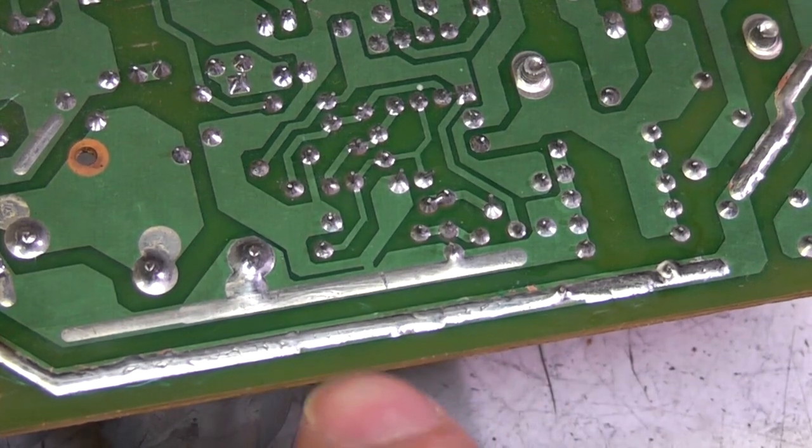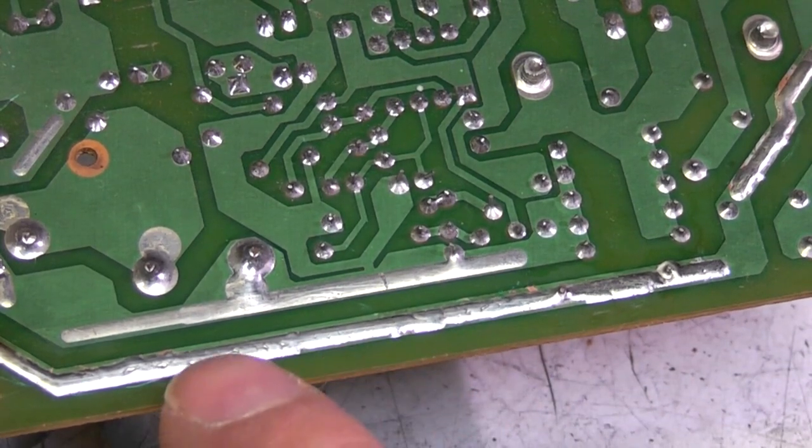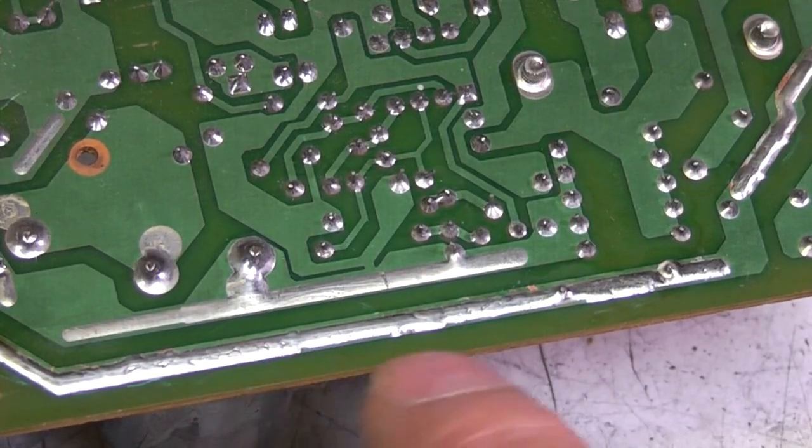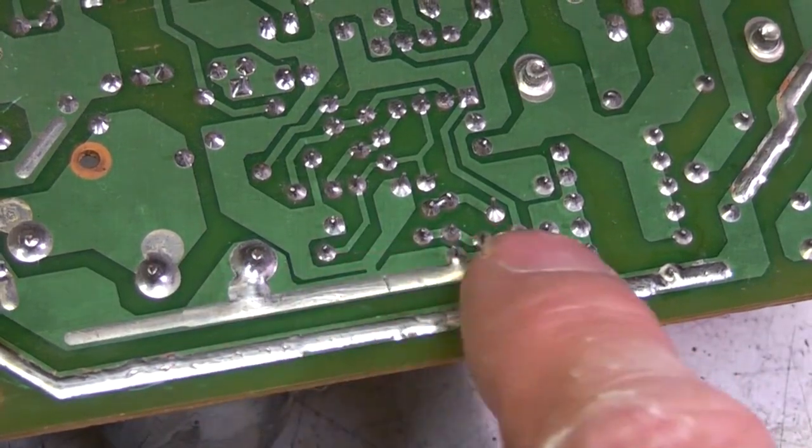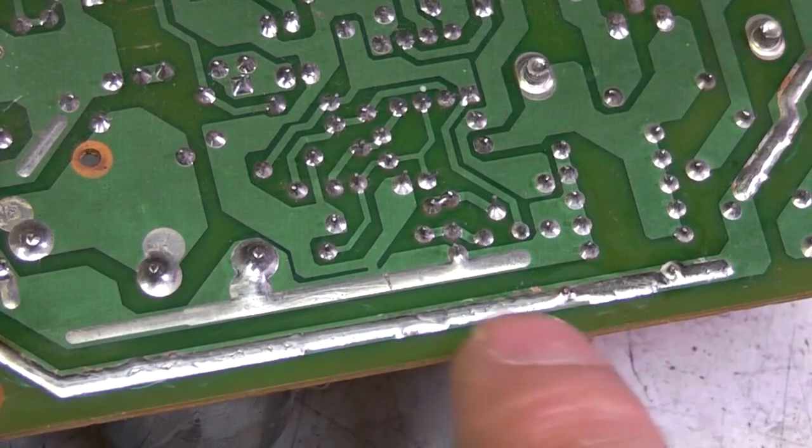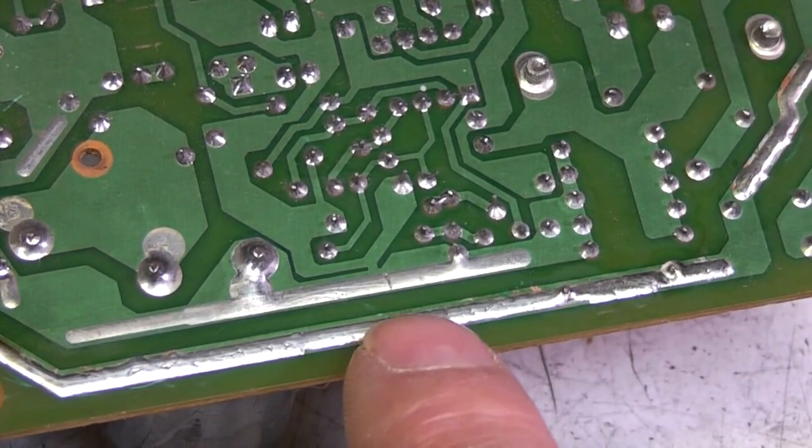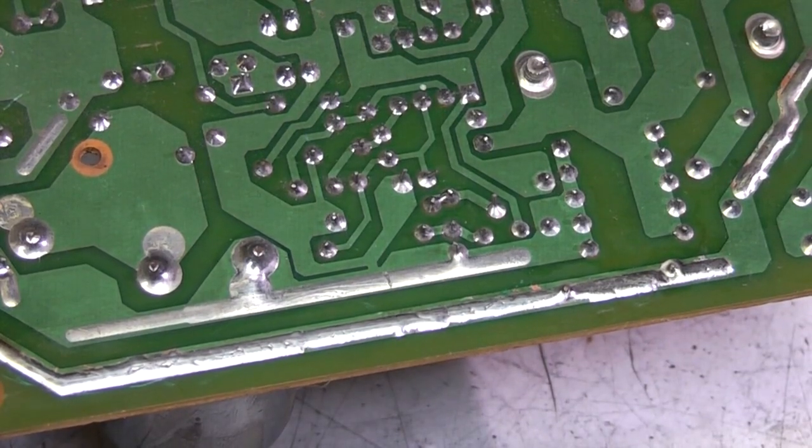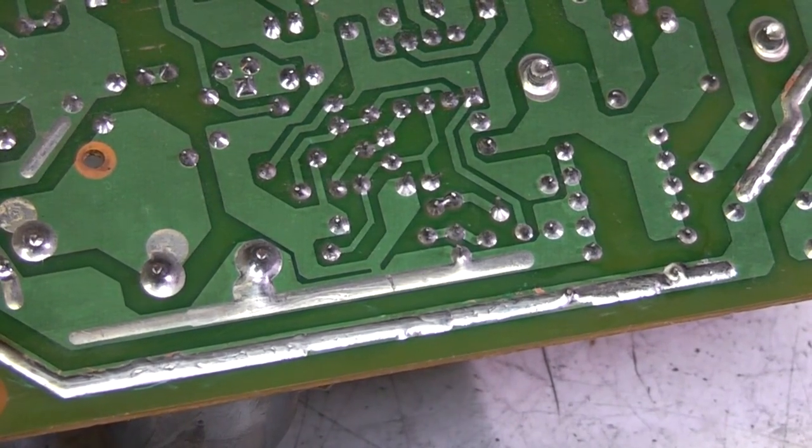This is something you quite often see, particularly in power supplies or any device putting high currents through a track. They leave the solder resist off and allow the solder from the flow soldering process to coat the track. This increases the current carrying capability by reducing its resistance. There's been discussion over at EEVblog about how much difference it actually makes, so I thought I'd do some measurements to find out.